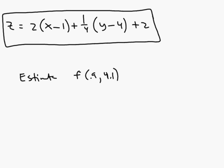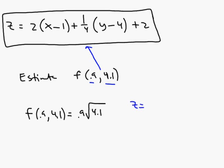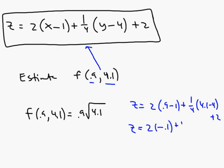You have an option. You could plug directly into the function: f of 0.9 comma 4.1 equals 0.9 times the square root of 4.1. But maybe you don't know that value without a calculator. So what you can do — and this is practical — is substitute these numbers into the tangent plane, since the tangent plane does a really good job estimating z values close to the point of tangency.